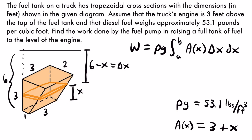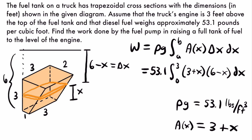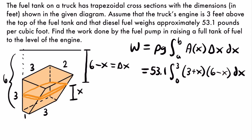We can now set up the definite integral to calculate the work done. W = 53.1 times the integral from 0 to 3 of the cross-sectional area (3 + x) times delta x (6 − x) dx. This definite integral will calculate the work done by the fuel pump in raising a full tank of fuel to the level of the engine in the truck.